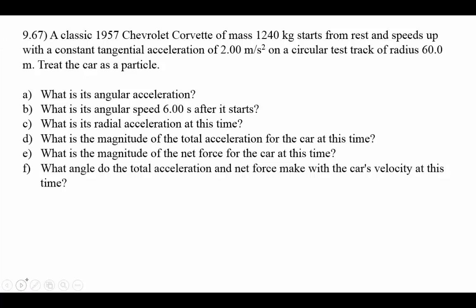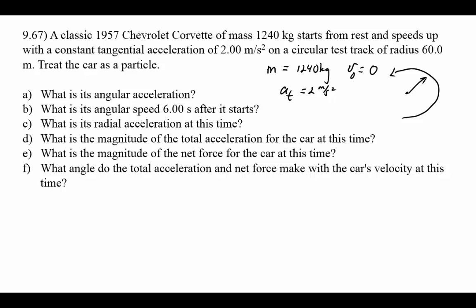Problem 9.67: a classic 1957 Chevrolet Corvette, mass 1240 kilograms, starts from rest — v naught equals zero — and speeds up with a constant tangential acceleration of 2 meters per second squared on a circular test track with a radius of 60 meters. Treating the car as a particle, the angular acceleration: a tangential equals r alpha, so 2 meters per second squared equals 60 meters times alpha.